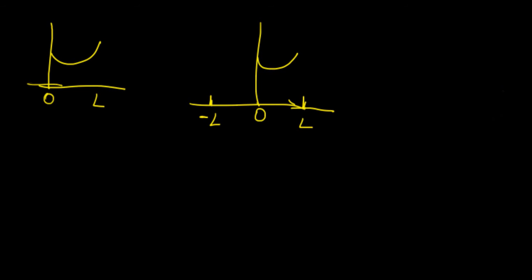The first choice is we can expand this function as an even function, which means this is just going to be a mirror projection, and in the end what we're going to get is a periodic function that repeats over and over with a period of 2L.